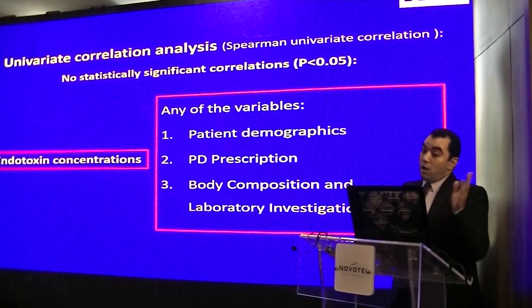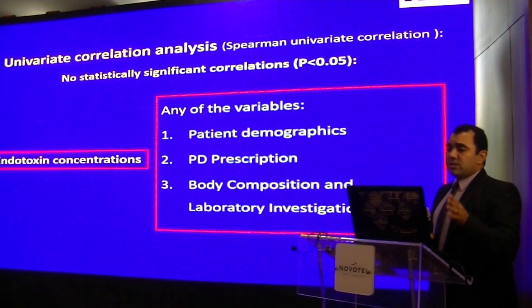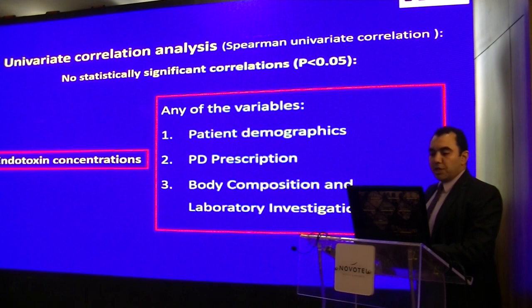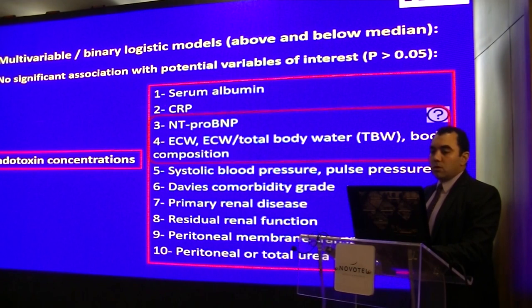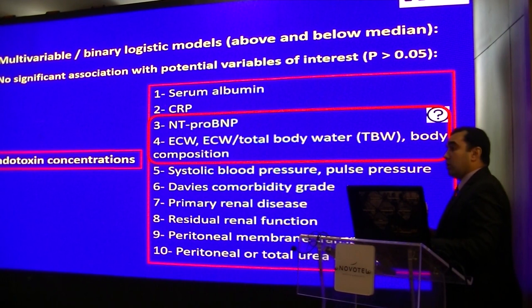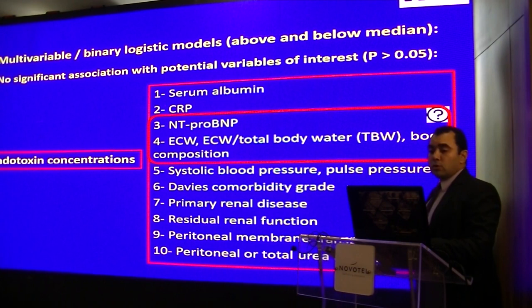When attempting to answer the second question, we performed univariate correlation analysis between endotoxin concentration and all variables related to patient demographics, PD prescription, body composition, and laboratory investigations — we found no significant correlation. We also performed multivariable and binary logistic models to assess whether there was an association between endotoxin concentration and variables of potential interest, particularly surrogates for volume overload — the overhydration parameter, extracellular water, extracellular to total body water ratio, and body composition. There was no significant association.